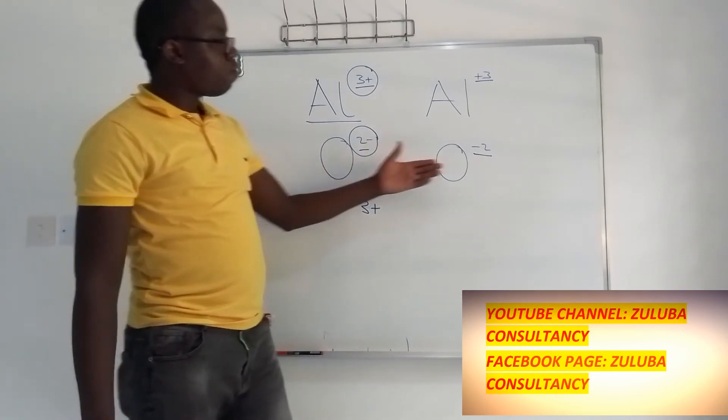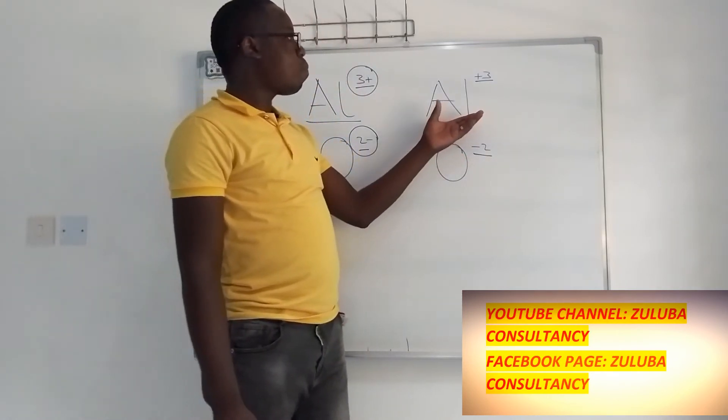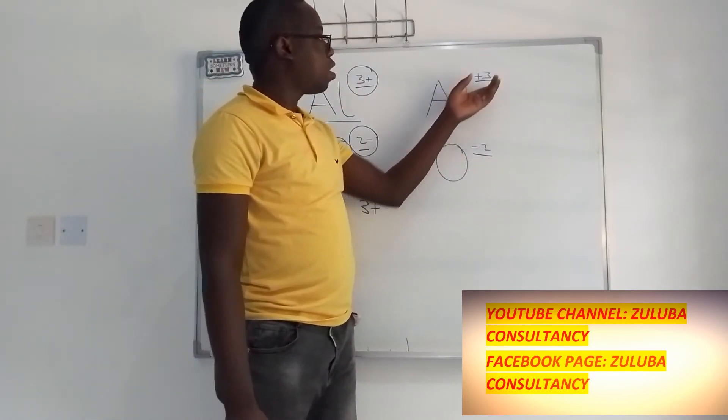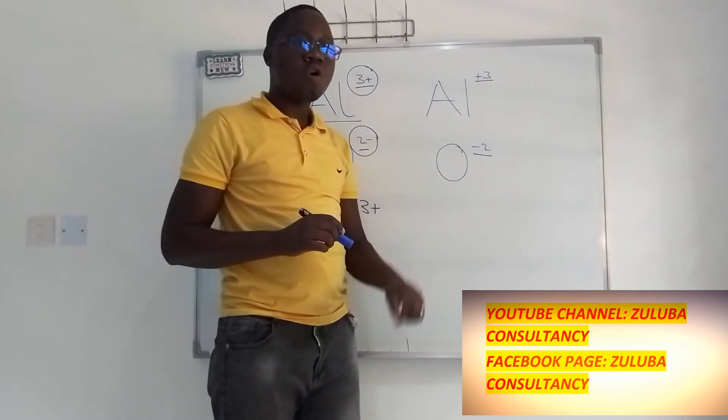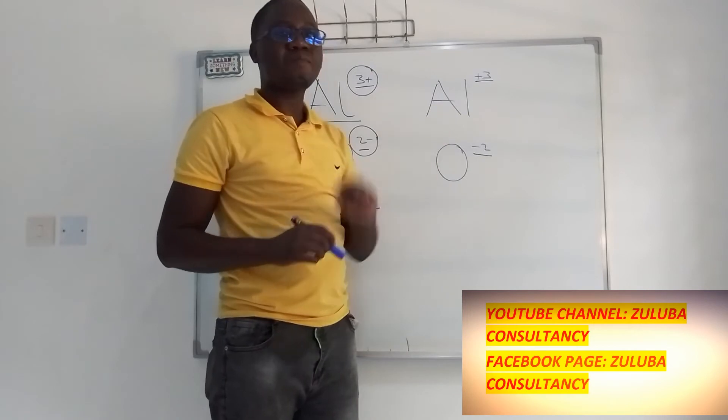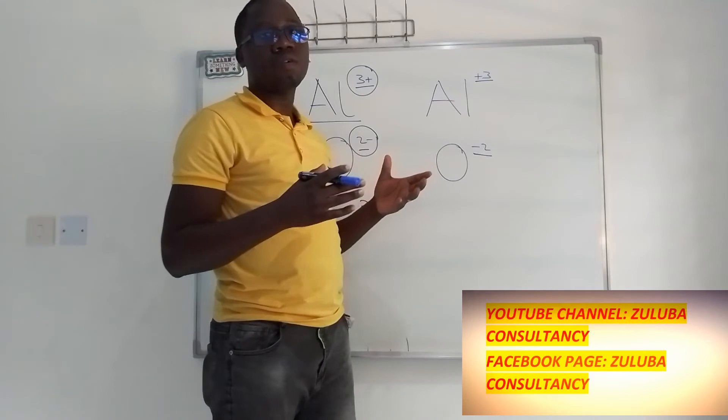Now what of these numbers? Now what of these numbers that we have here? Well, put simply these numbers, this number here helps us to know the oxidation number of an atom in a compound.